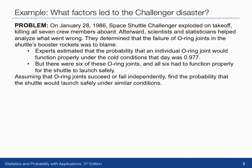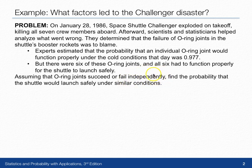There are two key facts to note. First, the experts estimated the probability that an individual O-ring joint would function properly under the cold conditions that day was 0.977. Next, in order to have a safe launch, all six of the O-ring joints had to function properly. Now, assuming that the O-ring joints succeed or fail independently, let's find the probability that the shuttle would launch safely under similar conditions.